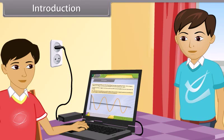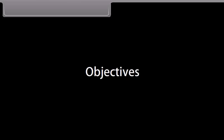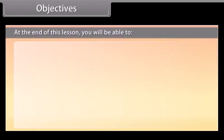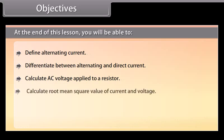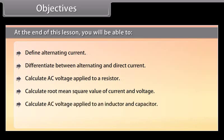Children, today we will study about alternating current. At the end of this lesson, you will be able to: define alternating current; differentiate between alternating and direct current; calculate AC voltage applied to a resistor; calculate root mean square value of current and voltage; calculate AC voltage applied to an inductor and capacitor; define inductive reactance and capacitive reactance.